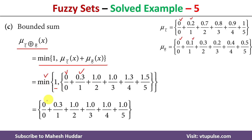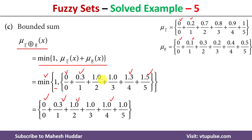Between 1 and 0, the minimum is 0. Between 1 and 0.3, the minimum is 0.3. Between 1 and 1, the minimum is 1. Between 1 and 1.3, the minimum is 1. Between 1 and 1.5, the minimum is 1. This is how we calculate the bounded sum of two fuzzy sets.